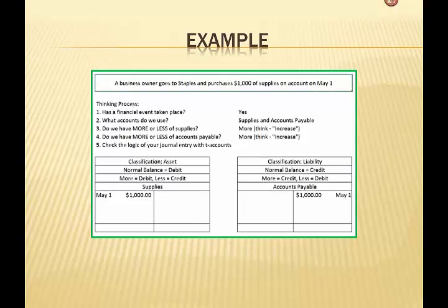I also have more accounts payable and since the normal balance is a credit, to have more of it I would credit that account. And voila, my journal entry—if I were to write it out I would have a debit to supplies, a credit to accounts payable, and my journal entry will balance.